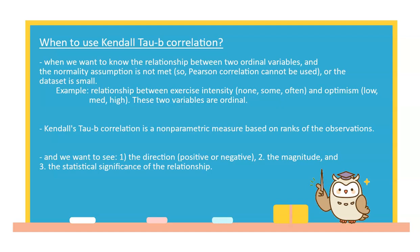When do we use Kendall Tau-B correlation? We use Kendall Tau-B correlation when we want to know the relationship between two ordinal variables, when the normality assumption is not met so we cannot use Pearson correlation, or when the data set is small.